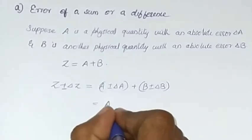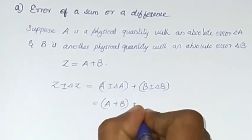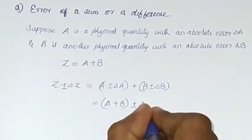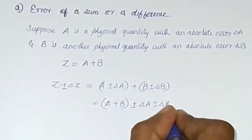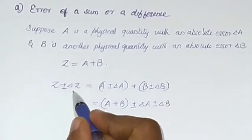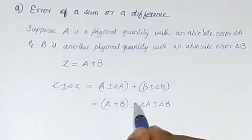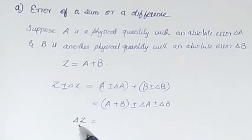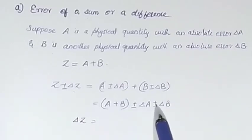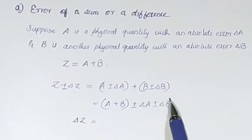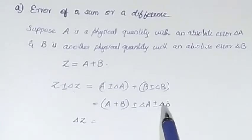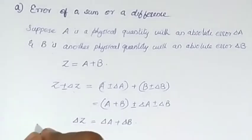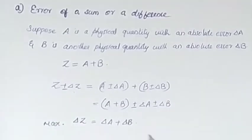This can be written as (a + b) ± delta a ± delta b. So delta z may have values of ± delta a ± delta b. From this we can say that the maximum value of the error delta z is delta a + delta b. Thus, the maximum possible error in the quantity z is obtained as delta a + delta b.